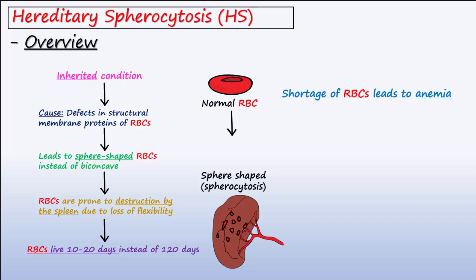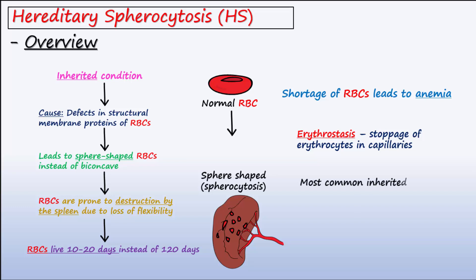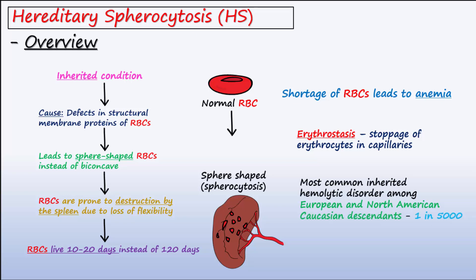HS is also characterized by erythrostasis, which is the stoppage of erythrocytes in capillaries. HS most frequently occurs among Northern European and Caucasian descendants, where rates are 1 in 5,000.